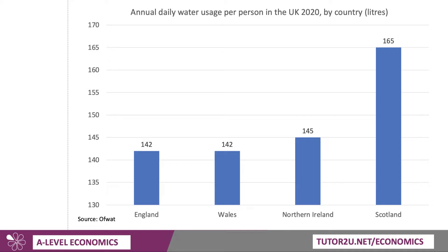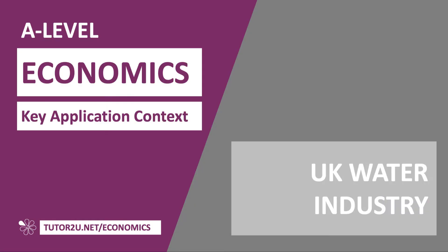And the last point: this would be a classic economics question — what policies might be effective in getting people to reduce their daily water usage? England uses 142 litres per person per day; it's higher in Scotland. Can we bring that down year on year to help reduce water scarcity? Hopefully this was useful — just a quick overview on the UK water industry. If you have a little bit of knowledge on these kinds of industries for each market structure, I think you're going to be in great shape for the exams.